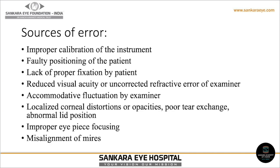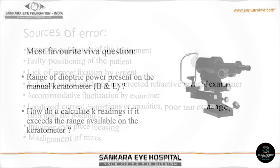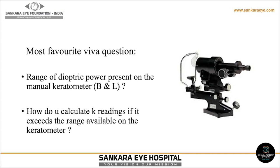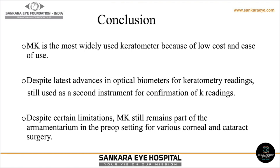A commonly asked VIVA question is: what is the range of dioptric power on the manual keratometer (Bosch and Lomb), and how do you calculate K readings if they exceed the available range? To conclude, the manual keratometer is the most widely used keratometer because of its low cost and ease of use. Despite the latest advances in optical biometers for keratometry readings, it is still used as a second instrument for confirmation of K readings. Despite certain limitations, the manual keratometer remains part of the armamentarium in the pre-operative workup for various corneal and cataract surgeries. Thank you for your kind attention.